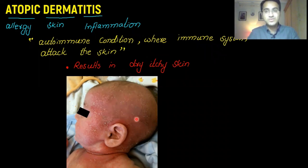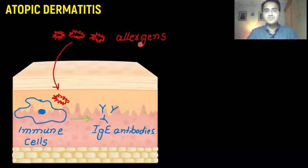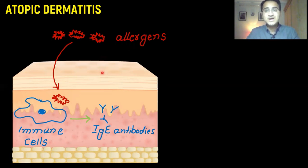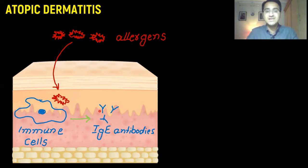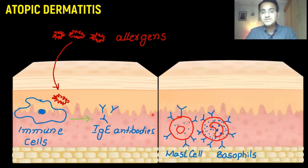This is a picture showing a patient with atopic dermatitis — look at this dry itchy skin. In atopic dermatitis, certain allergens enter the skin. These allergens can be dust mites, pollen, or certain food particles. They are taken up by immune cells, which then secrete antibodies called IgE antibodies. These IgE antibodies are produced from first exposure to certain allergens and bind to the surfaces of mast cells and basophils.